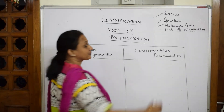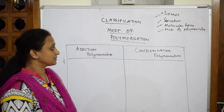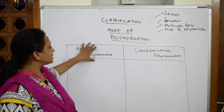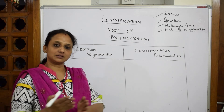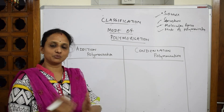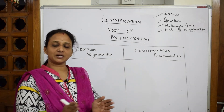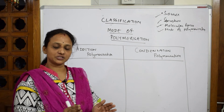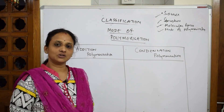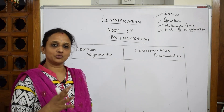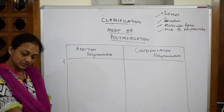Now let's look at classification based on mode of polymerization. If monomers are added one after the other, that is addition polymerization. In condensation polymerization, bifunctional or trifunctional monomers condense, and each time a small molecule such as water, HCl, or ammonia is eliminated.